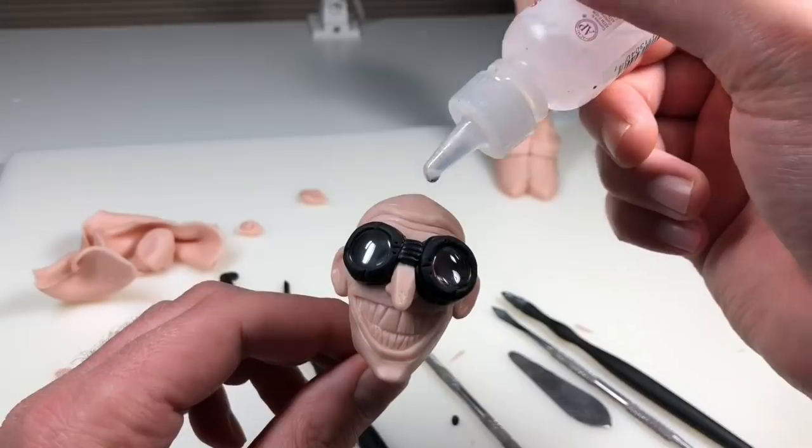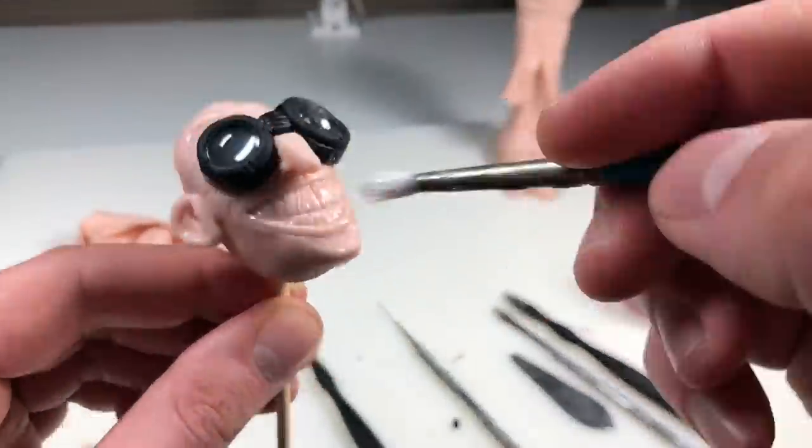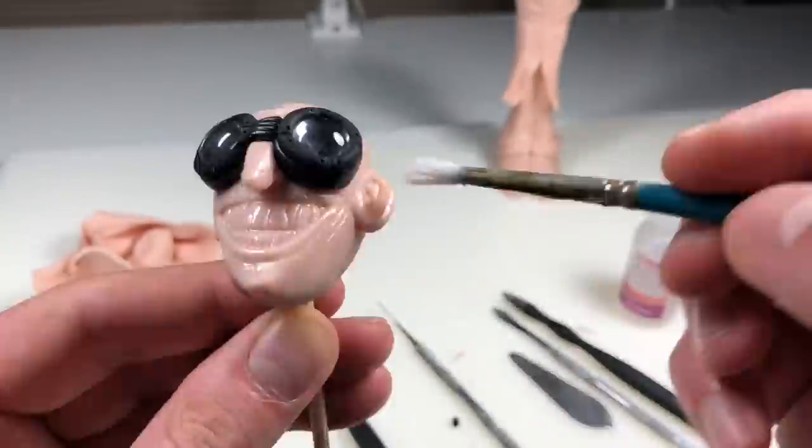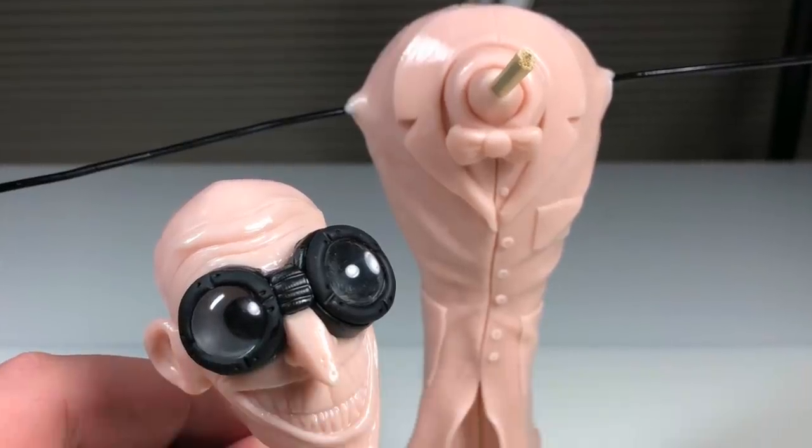And that's looking pretty good. Now before I bake him, I just want to brush the entire surface with some clay softener to remove fingerprints and smooth everything out. Can't forget his body. Now it's time for the oven.